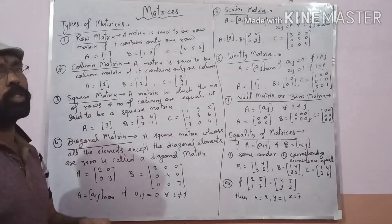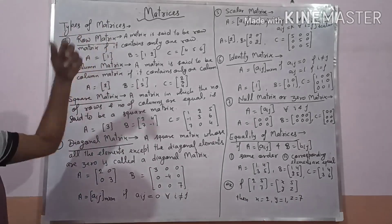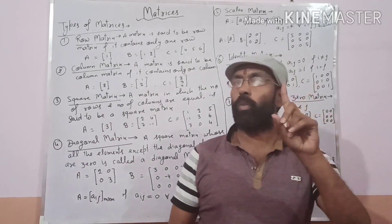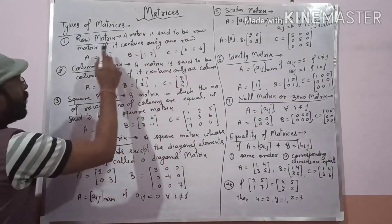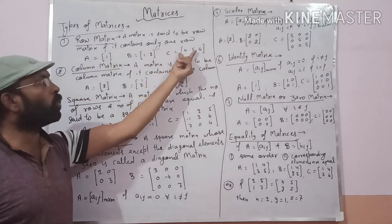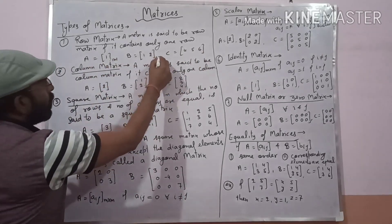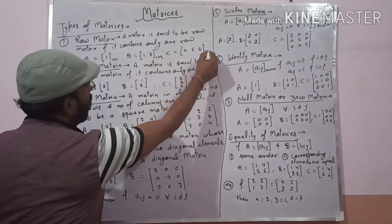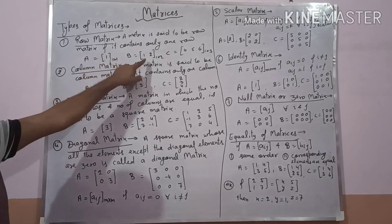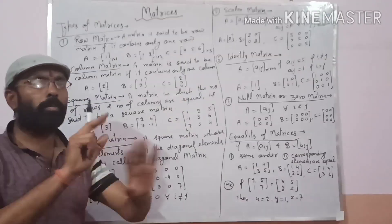Types of matrices. The first type is the row matrix. A row matrix contains only one row. For example, A=[1], B=[1 2], C=[4 5 6]. The orders are 1 by 1, 1 by 2, and 1 by 3. So in a row matrix, the number of rows is always 1, while the number of columns may be 1, 2, 3, or different.